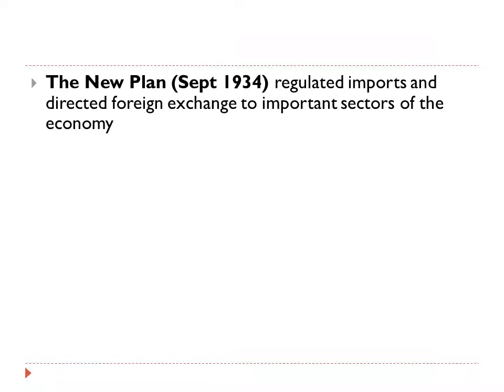One of the most important things Schacht put in place was the New Plan, implemented in September 1934. Its purpose was to regulate imports and direct foreign exchange to the most important sectors of the economy — limiting imports so that more money stayed within the country, and directing export revenue into the sectors most beneficial to the economy. A key goal was decreasing unemployment, because unemployed people are not spending money. Spending has a multiplier effect: it provides income to industries, who can employ more people, who then have more money, and so on.